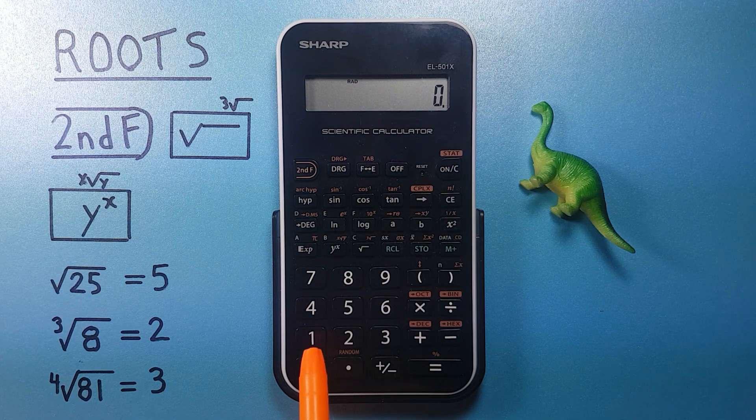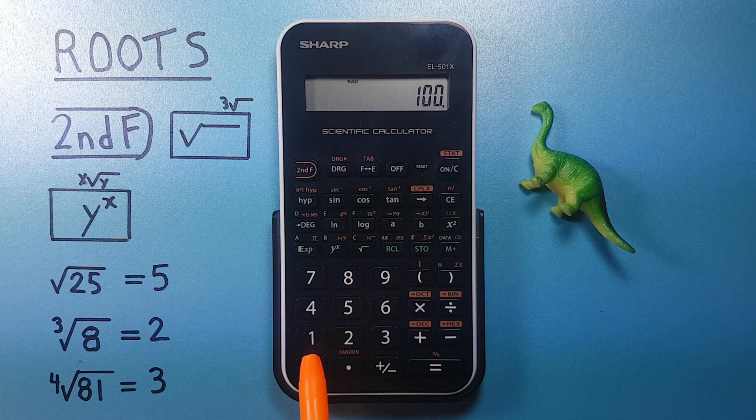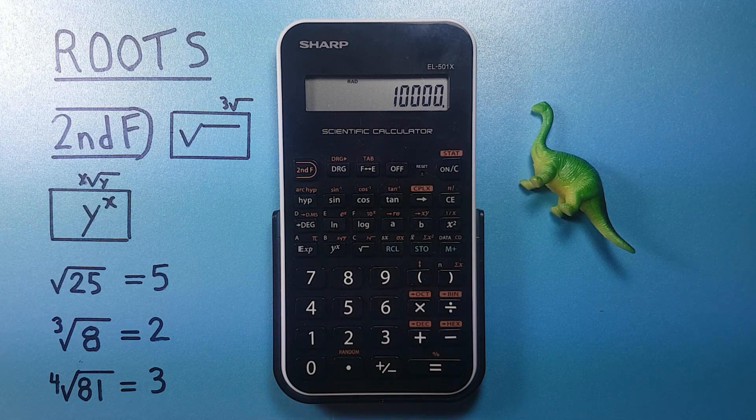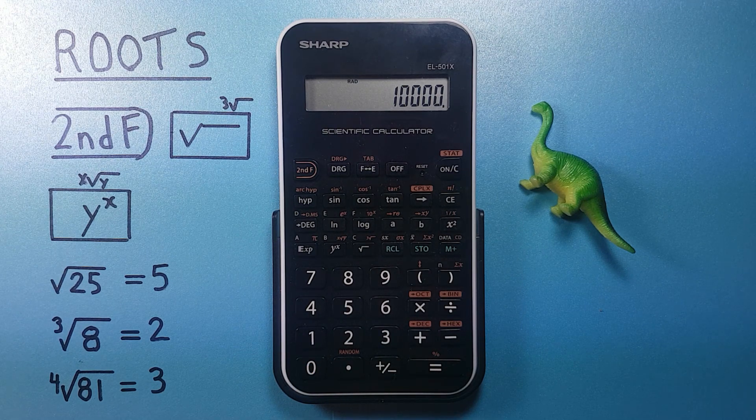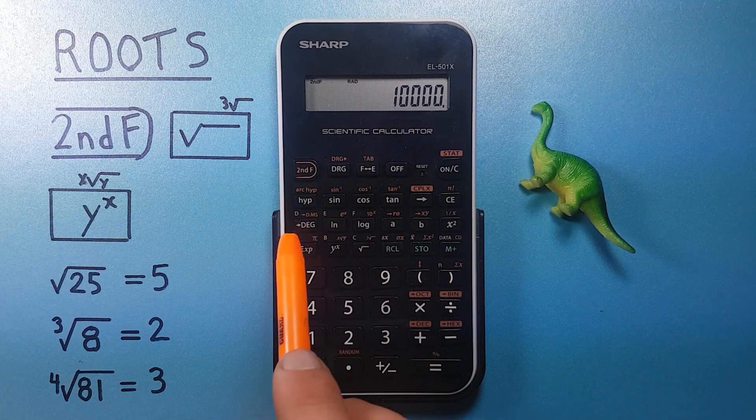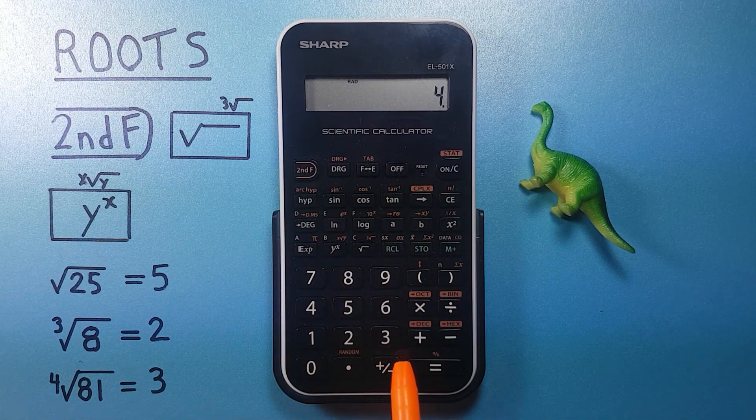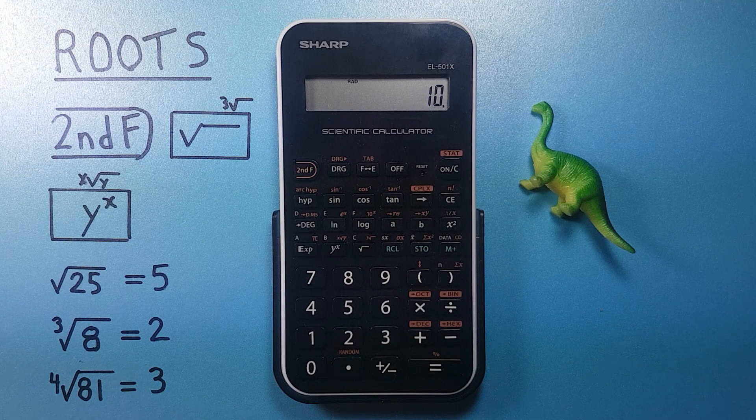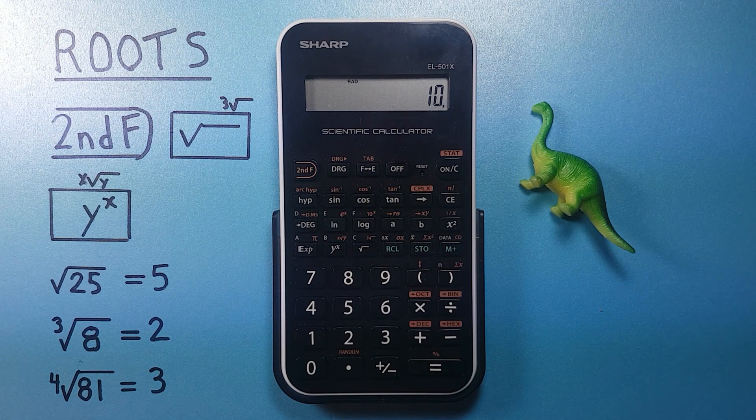How about 10,000? Let's try this to the fourth root. So second function y to the x, 4 equals 10. There we go. So it works.